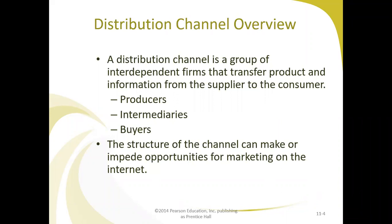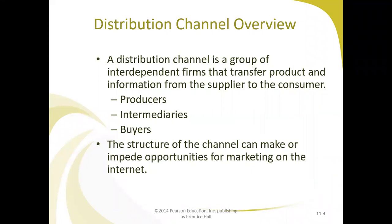A distribution channel is a group of interdependent firms that transfer product and information from supply to the consumer. They form the chain through which a product or service passes from producer to consumer. This includes producers — the manufacturers and their suppliers who originate the product or service — intermediaries, who are firms that match buyers and sellers and mediate transactions, such as wholesalers and retailers, and buyers, the consumers or users of the product or service.